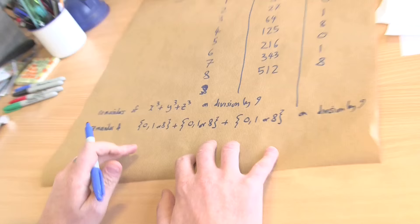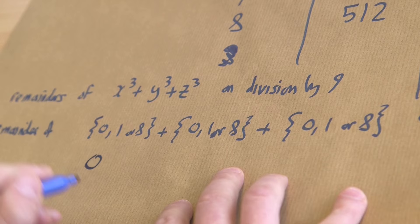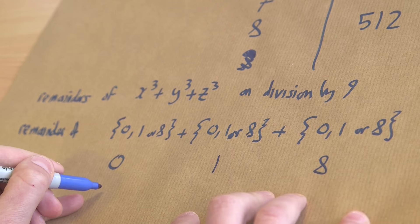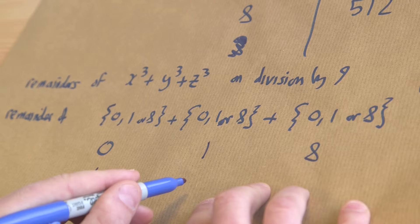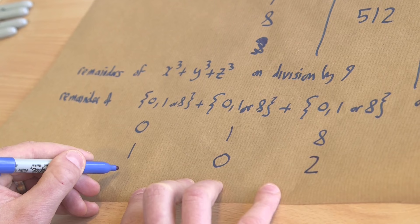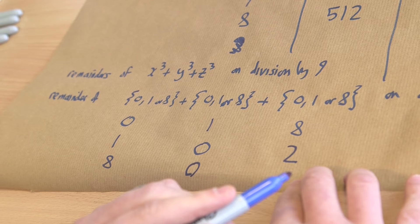So if I'm interested in the remainders of this number on division by 9, all I have to do is consider all possible sums of 0, 1, or 8 plus 0, 1, or 8 plus 0, 1, or 8, again on division by 9. Now I just have to go through all 27 possibilities here. I could add 0 to 0 to 0, that would give me 0. I could add 0 to 0 to 1, that would give me 1. 0 to 0 to 8 gives 8. 0 to 1 to 8 gives 9, which on division by 9 gives remainder 0. And 0 to 8 to 8: 8 plus 8 is 16, which on division by 9 gives remainder 7.